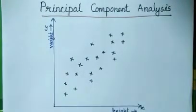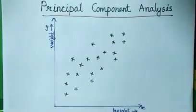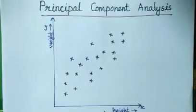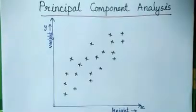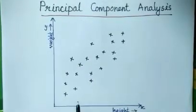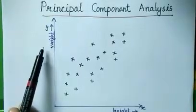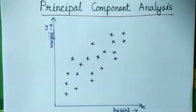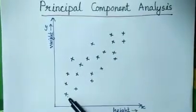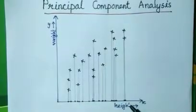Here you can see a scatter diagram of a data set. This data set has two features: one is height and the second one is weight, so this is a two-dimensional data set. Now suppose we want to reduce this two-dimensional data to one dimension. In the subset selection method we select either one of the features — either height or weight as the input variable. Suppose if we choose height as the input variable, let's see how all these data points are projected onto the x-axis. This is how each data point is projected on the x-axis.